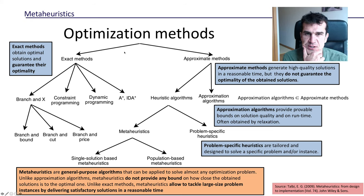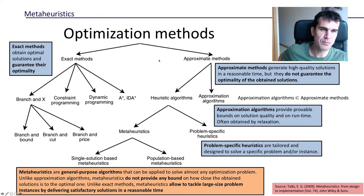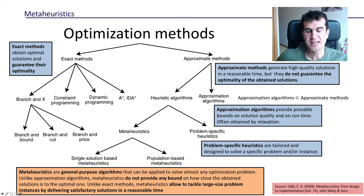So the first division we could make of optimization methods is into two separate classes. One is exact methods, and the other one is approximate methods. Exact methods provide the optimum for sure. They guarantee that if you use that method, you will get the best possible solution.